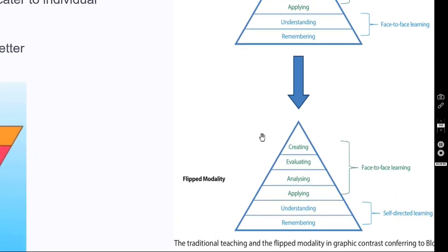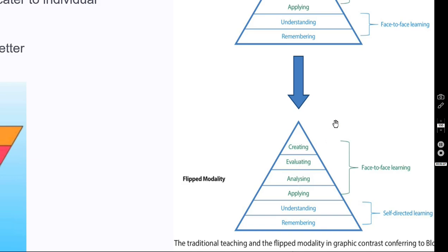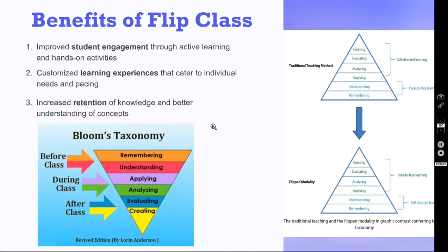Whereas in flip class, students do the understanding and remembering on their own at home first. Then during the class period — the face-to-face learning — because students are doing active learning, all these things happen: applying, analyzing the knowledge, evaluating, and even creating. All these things happen during the class and post-class period as well. This is what is happening in flip class.